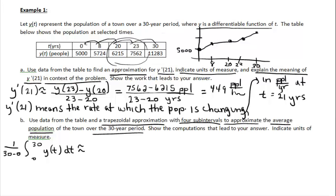If you need a visual, the trapezoids inscribed under the curve will help. For the trapezoidal approximation, I go from 0 to 8, up to the curve on either side, and connect — that's the first trapezoid. The next partition goes from 8 to 20, a distance of 12. The next trapezoid is 3 wide, from 20 to 23. The final trapezoid is 7 wide, from 23 to 30. In each trapezoid, the bases are the Y values.